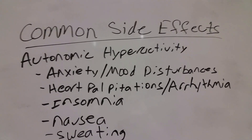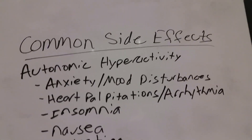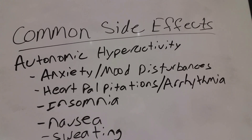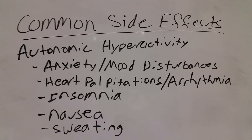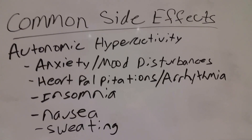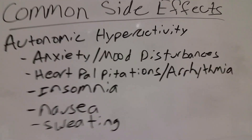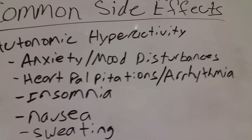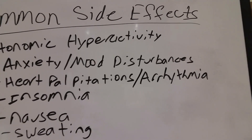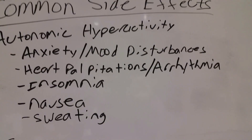The common side effects of ephedrine usually include arousal of the autonomic nervous system, or autonomic hyperactivity, which includes symptoms of anxiety, mood disturbances, heart palpitations — meaning increased heart rate or heart arrhythmia, which is an irregular heartbeat — insomnia, nausea, and sweating.